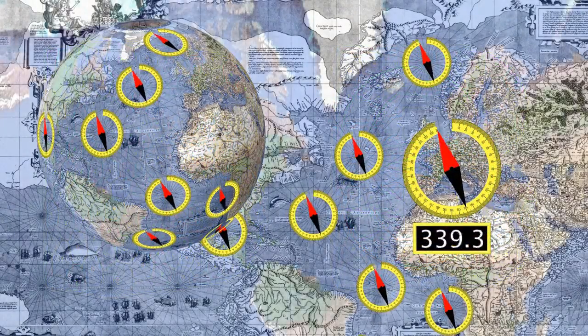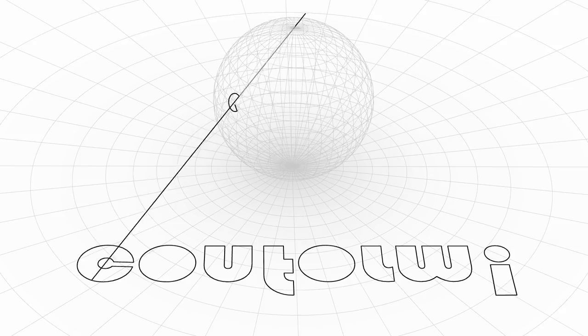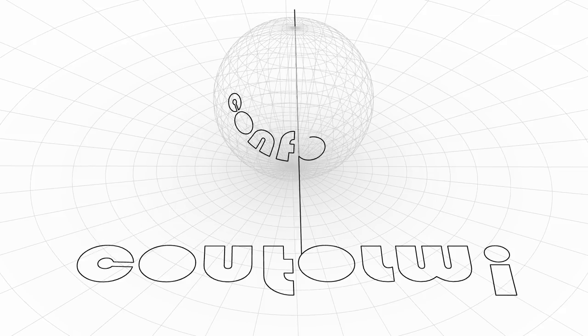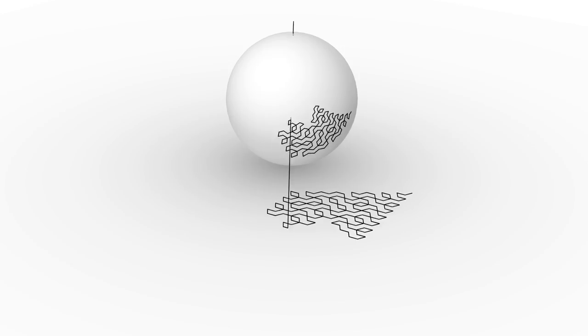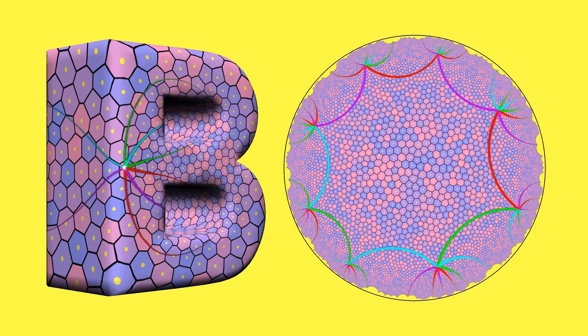A map that preserves angles is called conformal. Conformal maps have turned out to be of fundamental importance in mathematics. Is it always possible to find a conformal map between two shapes?